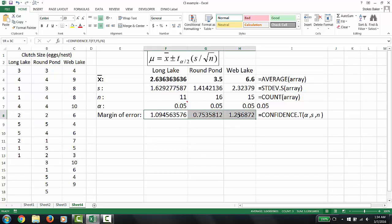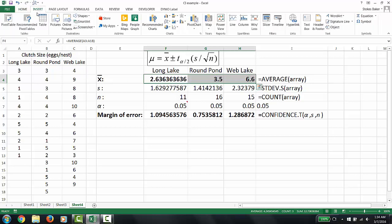So the information we need to make our bar graph is the sample means which are in bold and our margin of error which I've placed in bold also. To make our bar graph I'm going to first highlight our means and insert bar graph.